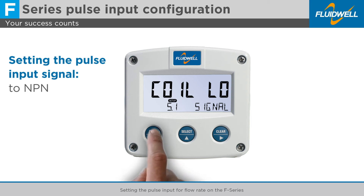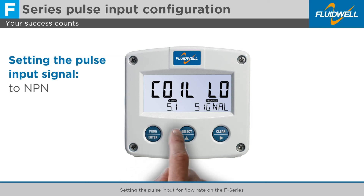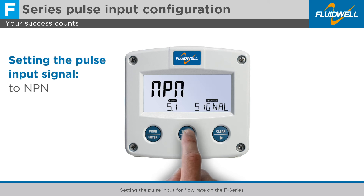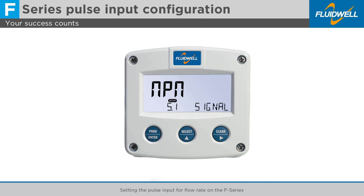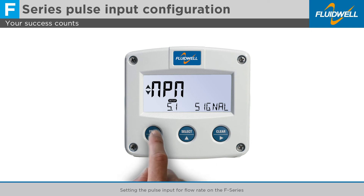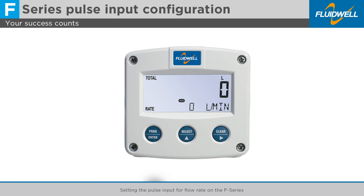Press Prog to change this setting. Press Select to search for the desired pulse signal NPN. Press Prog to store this setting. Now all is set, we are going back to Run Mode. Hold Prog for 3 seconds to exit the setup menu and return to Run Mode.